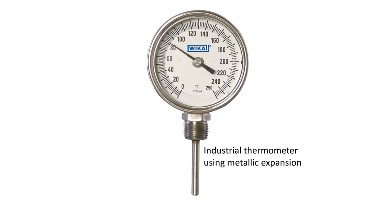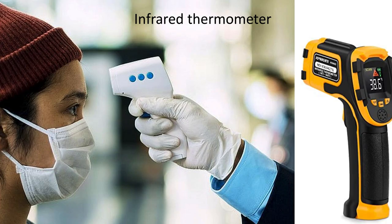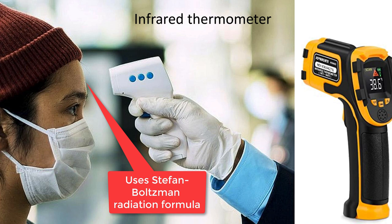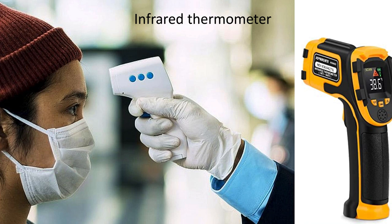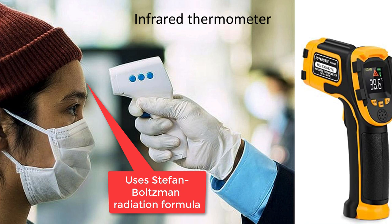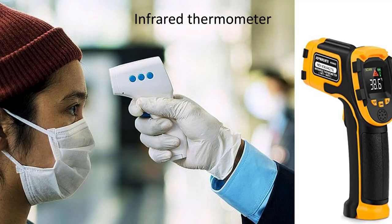Here's another example of a thermometer, an industrial thermometer. It uses metallic expansion instead of the expansion of a liquid. Here's a different kind of thermometer—it uses radiation from a hot body, something called the Stefan-Boltzmann law that we'll come to later. Here the amount of heat that is radiated from a person's skin is captured by sensors that look at a particular range of frequencies and estimate the temperature of the skin.